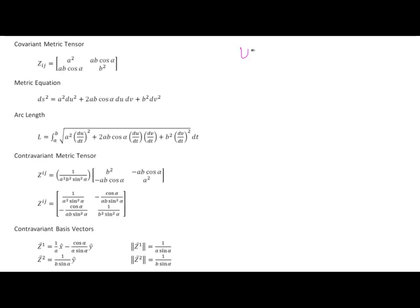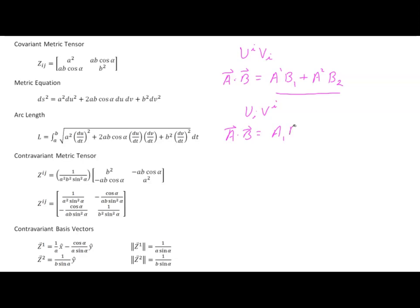Let me start by talking about this form U^i V_i, where one index is contravariant and the other is covariant. This is going to turn out to be a trivial solution in any coordinate system, because A·B is simply going to be a combination of one contravariant component with one covariant component. It's only a question of how many terms — this is a two-dimensional example, others would have a third dimension. Likewise, U_i V^i is going to be trivial, with a lower index and an upper index combined in each term. So these are very trivial.